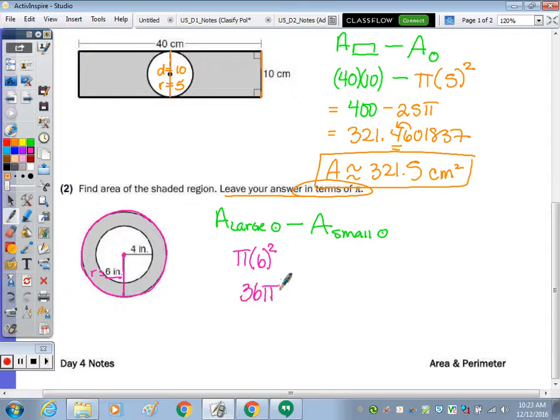6 squared is 36. So in terms of pi, that would be 36 pi. In orange, that smaller circle or inside circle, from the center to the outside, we have a radius of 4. So we're going to subtract pi times 4 squared. 4 squared is 16. We have 16 pi.